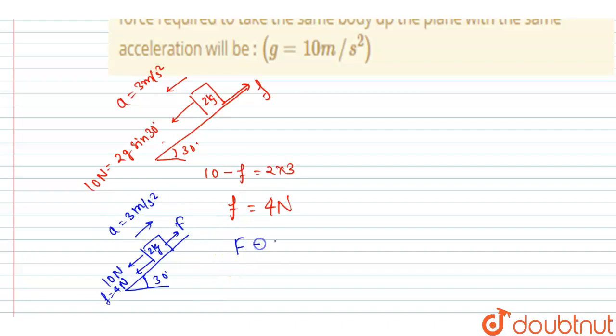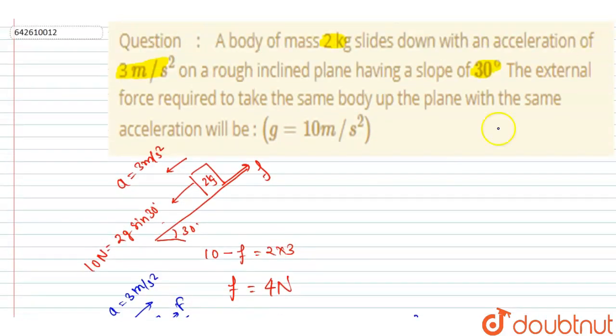So I will write F minus 10 minus 4 should be equal to m times a, that is 2 times the acceleration 3, which is 6. So I will write F equals 10 plus 4 plus 6, so that will be... oh wait, 20 Newton. And this will be your answer.